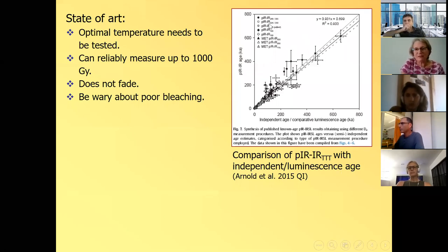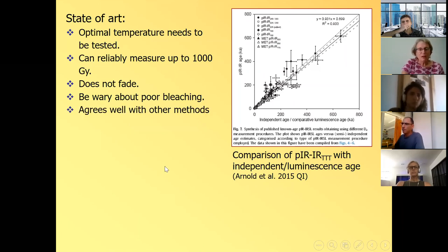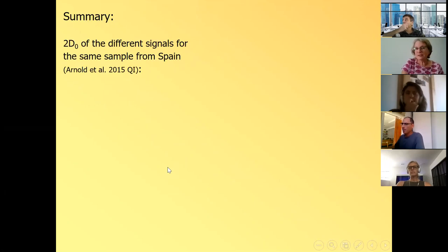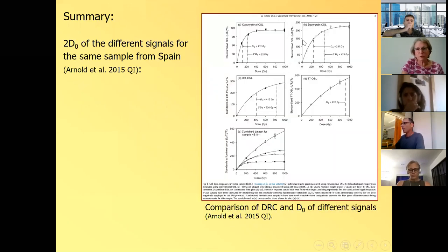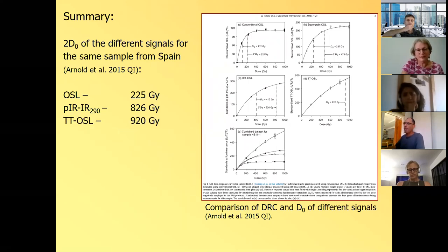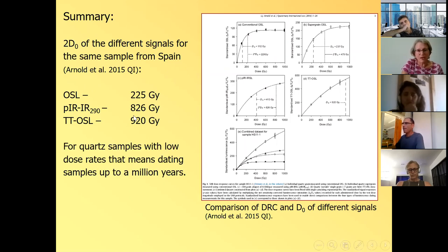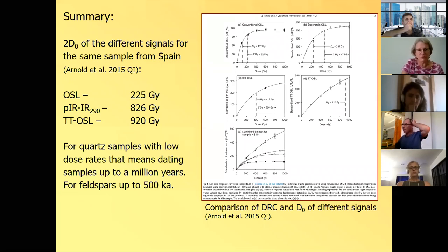So the state of art is you need to select the optimal temperature. It can measure reliably up to 1000 grays. It does not fade at least the one at 290 degrees. You have to be worried about poor bleaching. And again, we look at the comparison of post IRIR ages with other age control. And there's a pretty good agreement between independent age and the post IRIR ages. So to summarize these signals, I'm just showing the D naught of different signals for the same sample from Spain. And these are the different dose response curves of the different signals. So for OSL, for that particular sample, it's 225 gray. For post IR at 290, it's 830 gray. And for TTOSL, it's 920 gray, which means that for 920 gray, for quartz samples with low dose rate, we can measure samples up to a million years. And feldspars, because of the higher dose rate, up to 500,000 years.